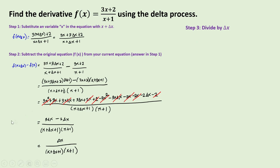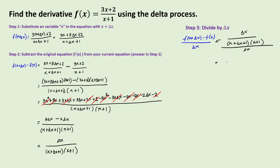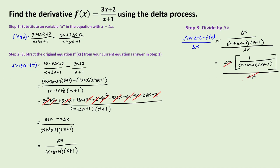For step three, we divide our answer in step two by delta x. So we have delta x over x plus delta x plus 1 times x plus 1, all divided by delta x. Factoring out delta x from the numerator and canceling delta x, what we have now is 1 over the product of x plus delta x plus 1 and x plus 1.